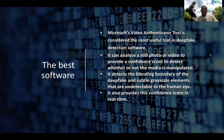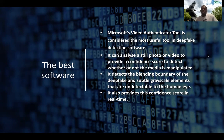Microsoft is leading the way with their Video Authenticator tool, considered the most useful tool in deepfake detection software. It can analyze a still photo or video to provide a confidence score, detects the blending boundary of deepfakes, grayscale elements, and things that wouldn't be detectable by our eyes alone. Good general practices for detecting deepfakes include looking for subtle cues in people's faces — such as inconsistent blinking, fading around facial features, or inconsistencies in their hair — anything that could help you detect a deepfake attack.